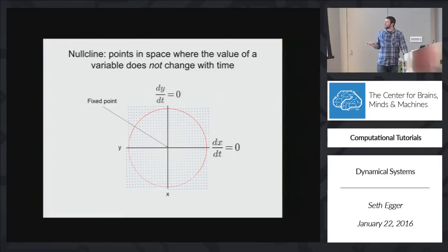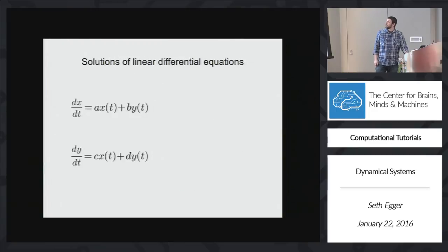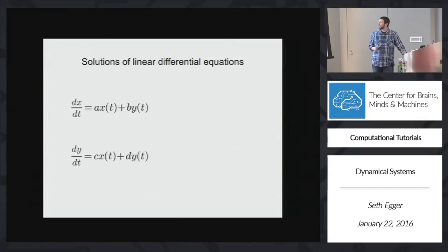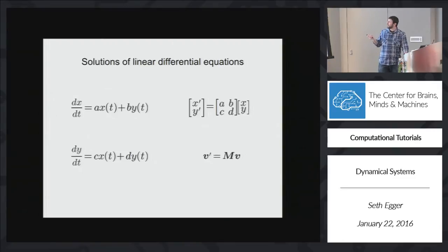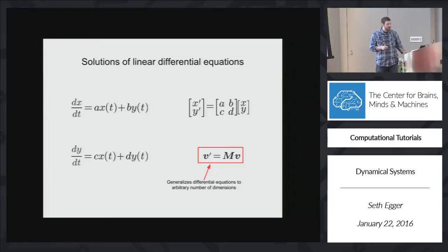Fixed points turn out to be pretty important because we can analyze fairly complicated dynamical systems by looking at the behavior around the fixed points. We can also write this system of equations a little bit differently — we can recognize that this is a system of linear equations, and write it as a matrix equation. That allows us to generalize this to an arbitrary number of variables, where v is a vector of arbitrary length and m controls how v changes over time by multiplying by v.